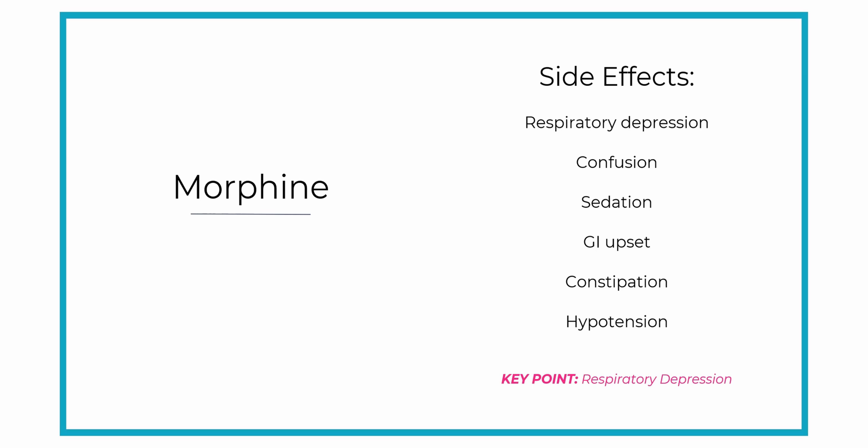When the CNS is slowed down, it slows everything down, so the GI system is slowed down too. Hypotension can also happen because morphine is a vasodilator due to its antihistamine effect as well, meaning it dilates the blood vessels and decreases blood pressure.